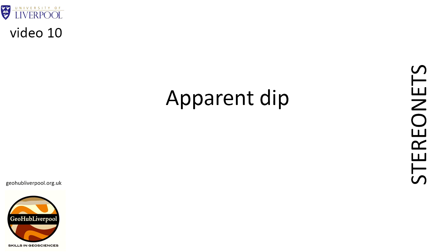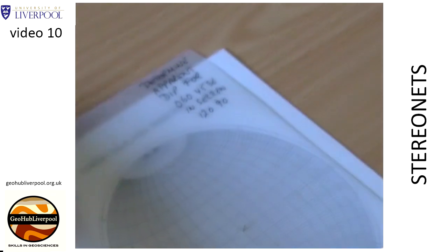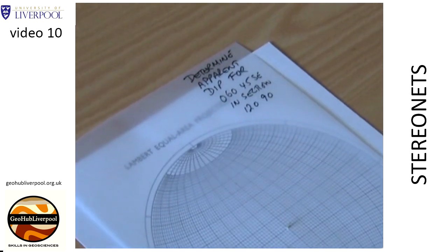When constructing geological cross-sections, it is useful to be able to work out the apparent dip for a true dip in a particular section. This clip shows how to work out the apparent dip of planes on a vertical cross-section trending 120 degrees. The planes have a strike of 060 degrees and a true dip of 45 degrees towards the southeast.